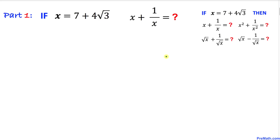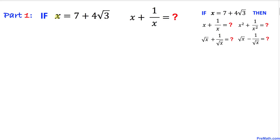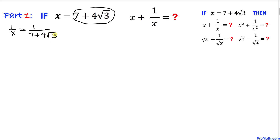Let's get started with Part 1. We are going to find the value of x plus 1 over x, where x equals 7 plus 4 times square root of 3. Our very first step: we already have the x value, and now we are going to calculate 1 over x, which is simply 1 divided by 7 plus 4 times square root of 3.